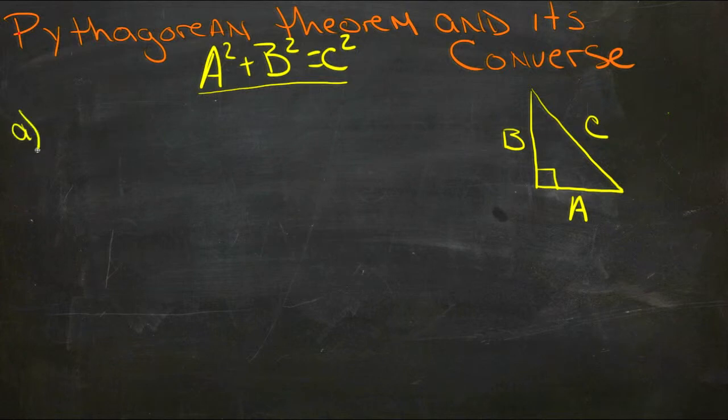Our first example, A, asks us if a triangle that has sides of 5, 12, and 13 is actually a right angle triangle. So what we're going to do is draw that into a triangle here, just sort of sketch it in a little bit.